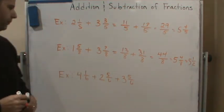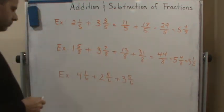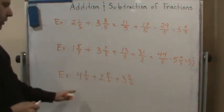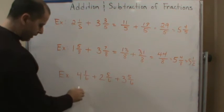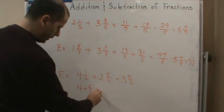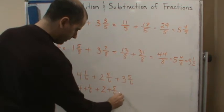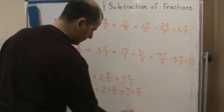The last one we have three. Now you know what, I'm going to show you another way to do this, because you don't necessarily have to change them to improper fractions. Remember what this means: this means 4 plus 1/6 plus 2 plus 5/6 plus 5/6 plus 3 plus 5/6.